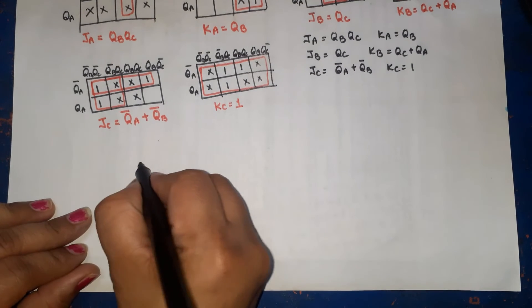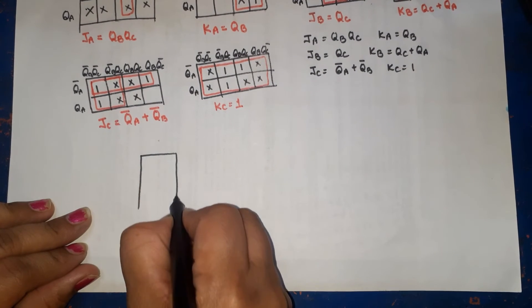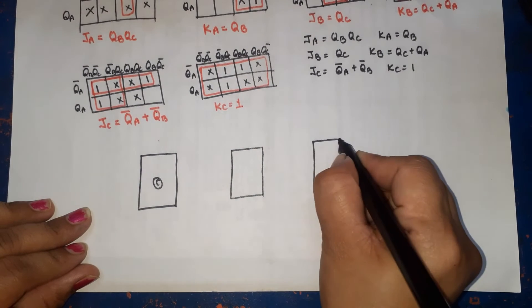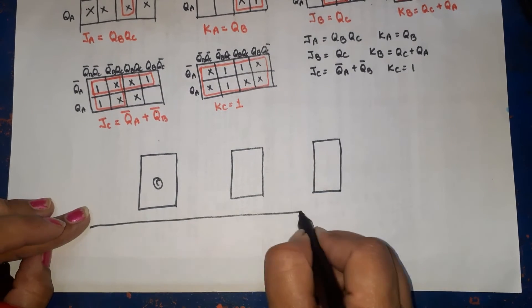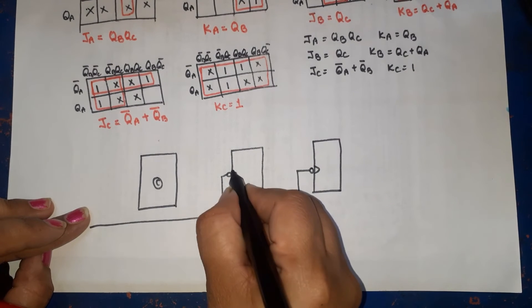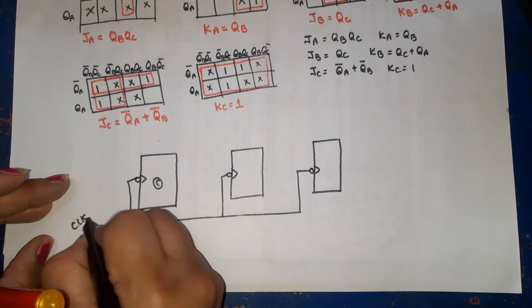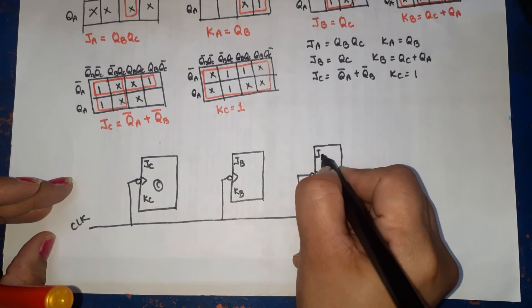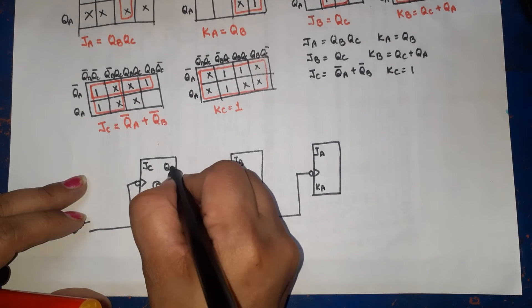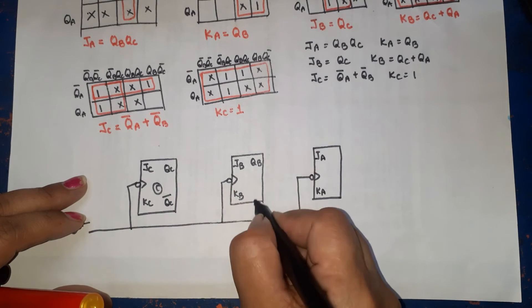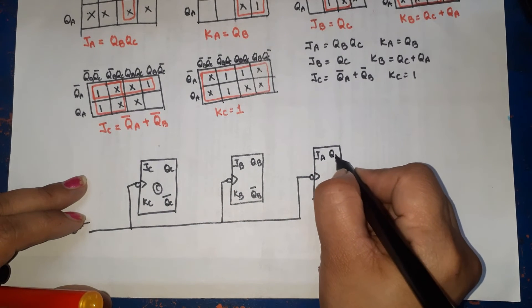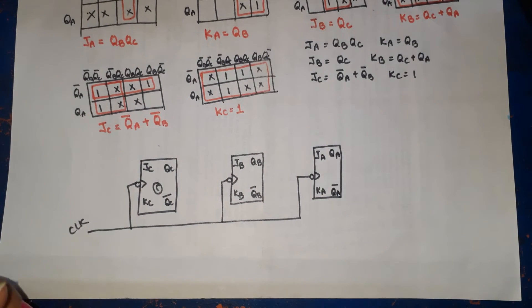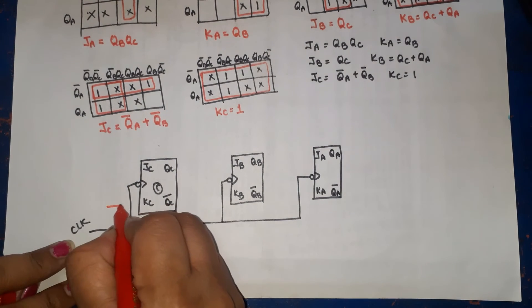This is our 3-bit synchronous counter. We have three JK flip-flops: C (LSB), then B, then A (MSB). Since it is a synchronous counter, the same clock is applied to all flip-flops. We connect KC=1 directly to VCC (logic 1). QC output feeds JB directly. QB feeds KA directly.